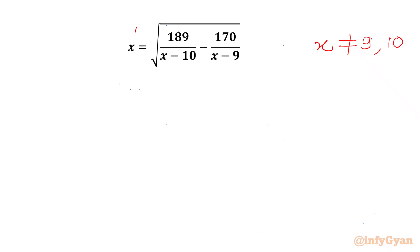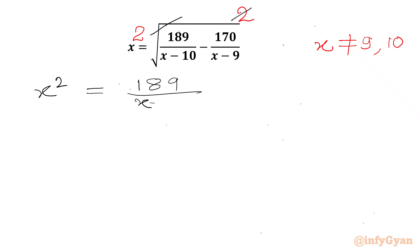Now I will consider squaring both sides. The square root and square will cancel out from our RHS. We will write our equation x² equal to 189 over (x minus 10) minus 170 over (x minus 9).